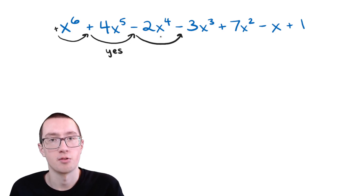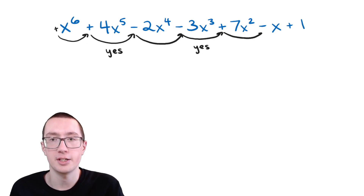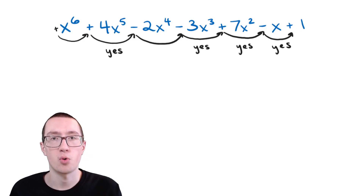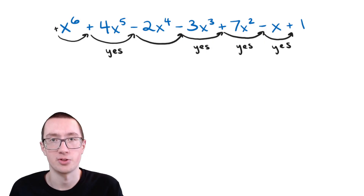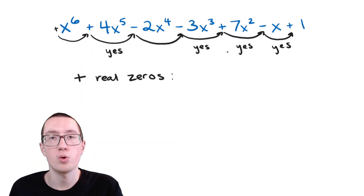Going through the polynomial, does the sign change here? Nope, no change. What about here? Yes, it changes from positive to negative — so we have our first change. What about here? Doesn't change. Here it does change — it goes from negative to positive, so that's another change. What about to here? Yes, it changes here as well. And then finally, it changes here as well. So here's the important part of Descartes' rule of signs: for every time the sign changes, that's how many positive real answers you can have.